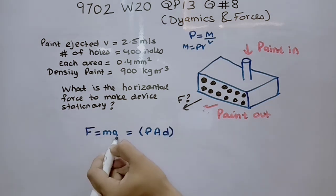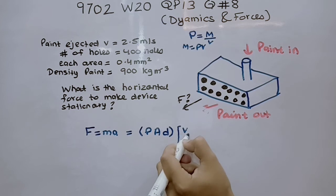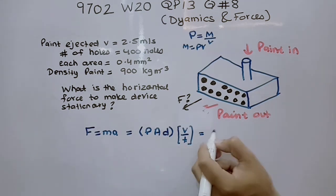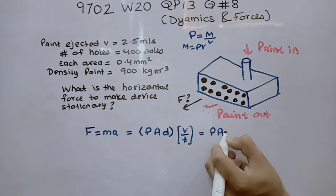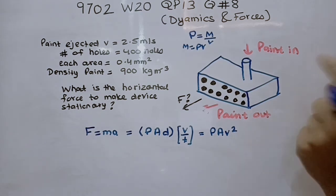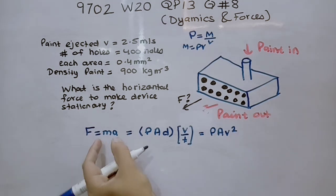And acceleration could be written as velocity by time. Now further what I can do is write this distance over time as velocity. So distance over time is velocity. We all know that. So this becomes density into area. The distance over time is velocity and velocity into velocity becomes velocity square. So hence we have created a formula from F equals to MA.